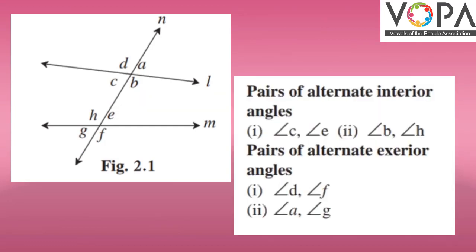The second type of angles are alternate angles. Here, alternate angles are in interior also and in exterior also. So, pairs of alternate interior angles will be angle C and angle E. And the second pair will be angle B and angle H.